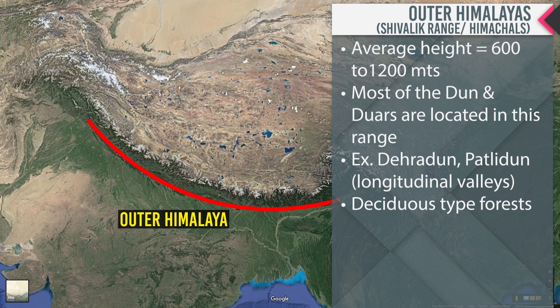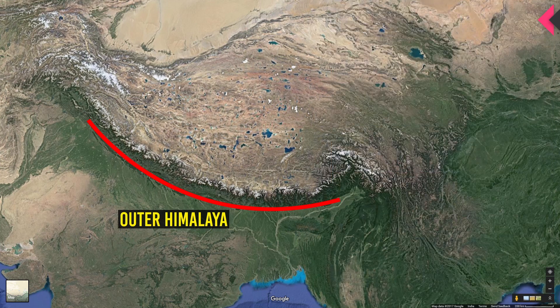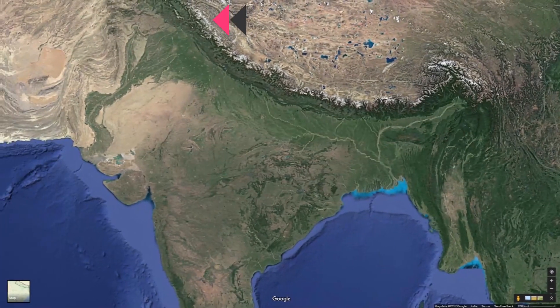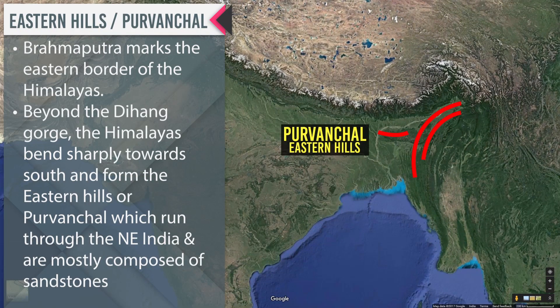The average height of the Outer Himalayas is 600 to 1200 meters. Most of the duns are located in this range — examples include Dehradun and Patli Dun. This region supports a deciduous type of forest.